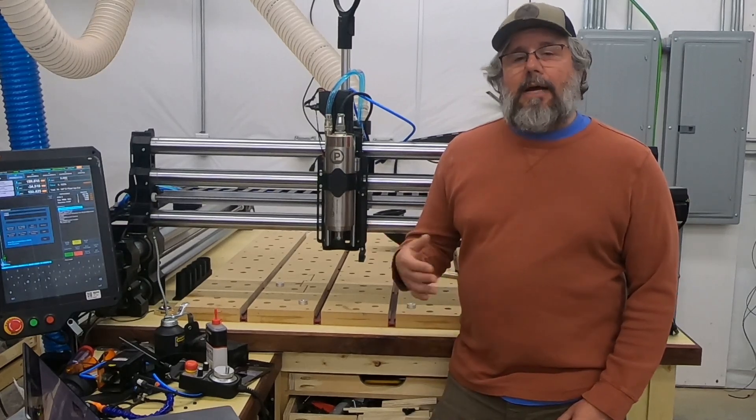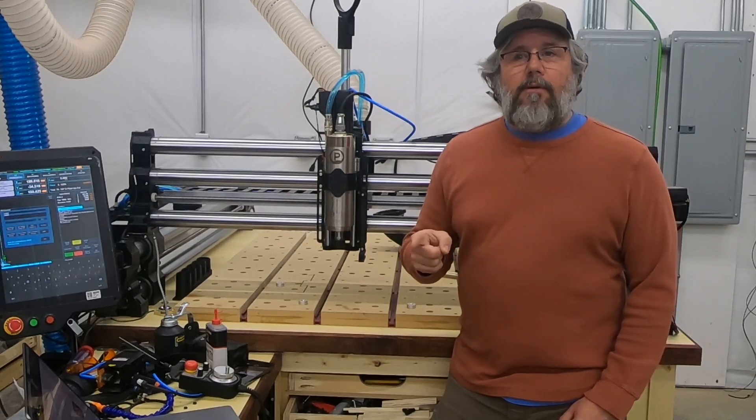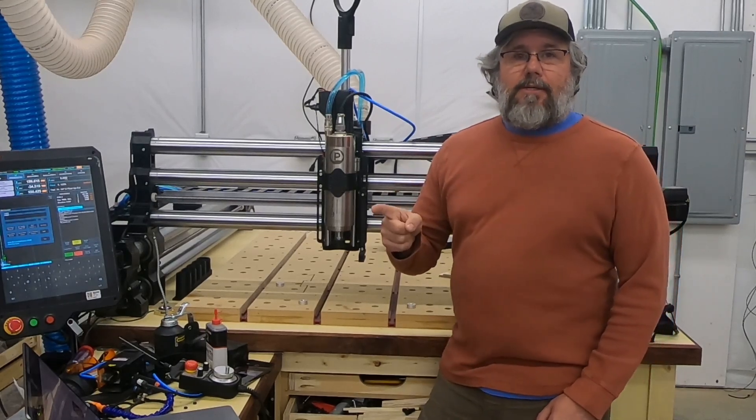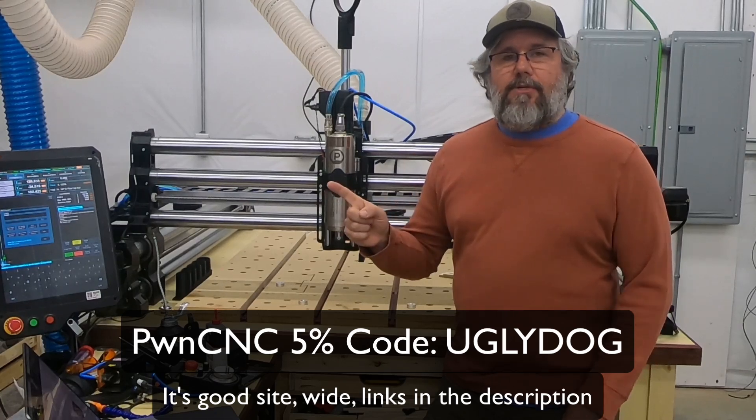In this video, I'm going to go through why I made that decision and how it's worked out for me since then. And by the way, if you're thinking of buying a PwnCNC spindle kit, use UGLYDOG as your coupon code at checkout and you'll get a 5% discount.